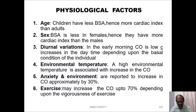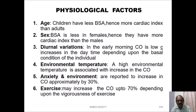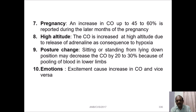Environmental temperature — a high environmental temperature is associated with an increase in cardiac output. Anxiety and the environment are reported to increase cardiac output by approximately 30%. Exercise also affects cardiac output; it may increase cardiac output up to 70% depending upon the intensity of exercise. Pregnancy also affects cardiac output — an increase of 45 to 60% is reported during the later months of pregnancy. At high altitude, cardiac output is increased due to the release of adrenaline as a consequence of hypoxia.